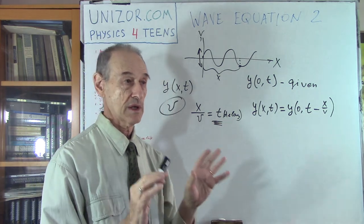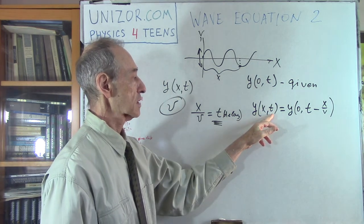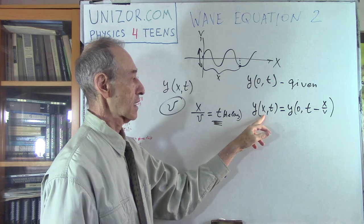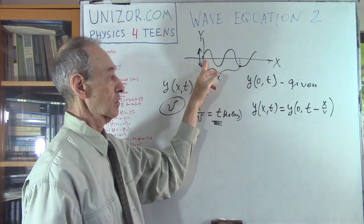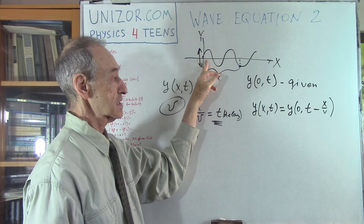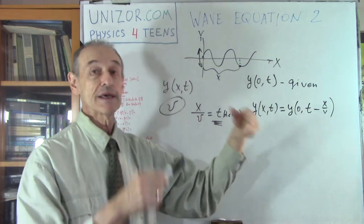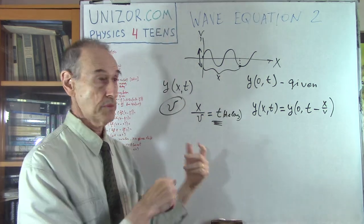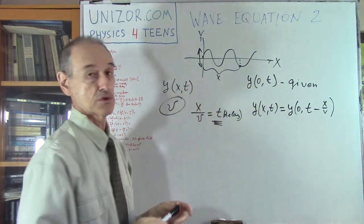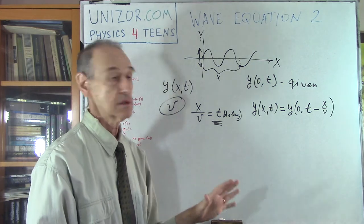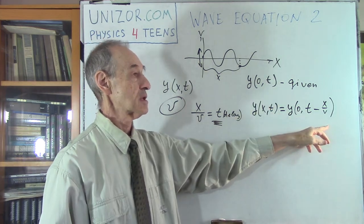This is a very important consideration, and I would like you to completely understand it. If you would like to know the value of Y at point X right now, you have to see what was the value of displacement at the driving end X divided by V seconds ago, because that movement at the beginning would be propagated to point X after X divided by V seconds. From this we will derive Y(x, t) = Y(0, t − x/v), if we know the initial function.